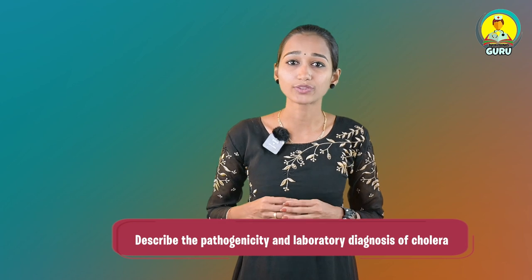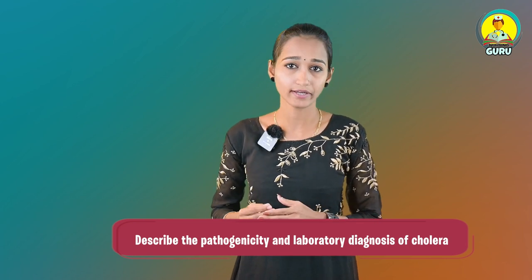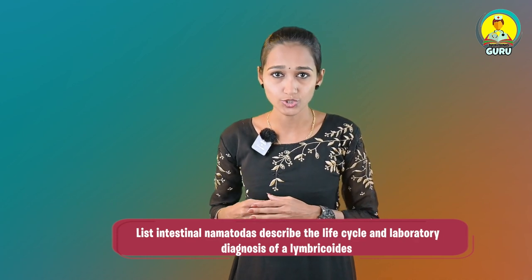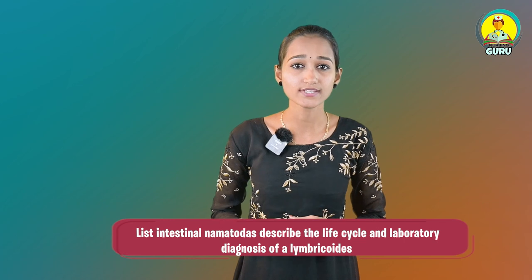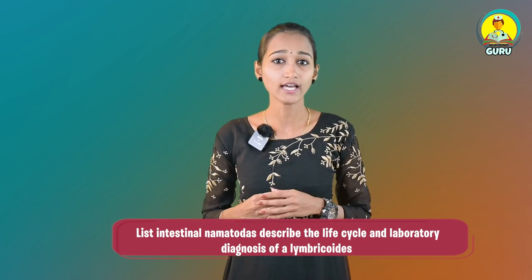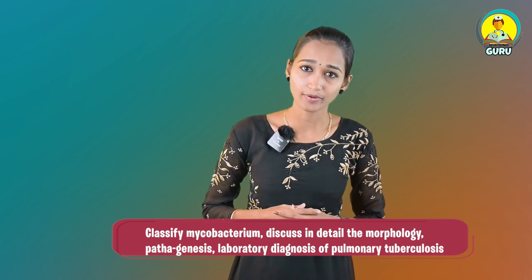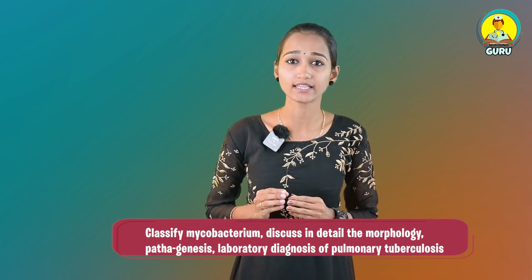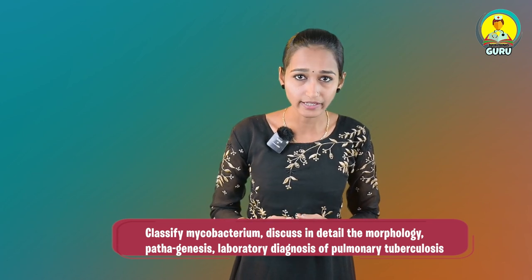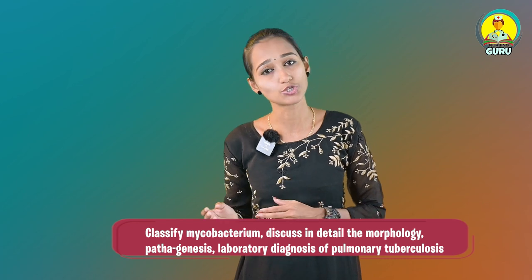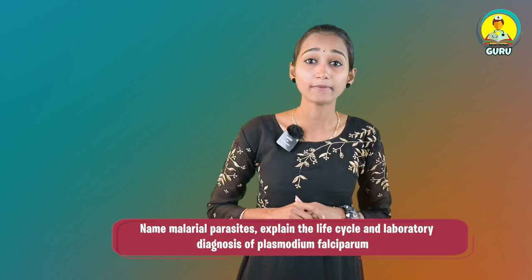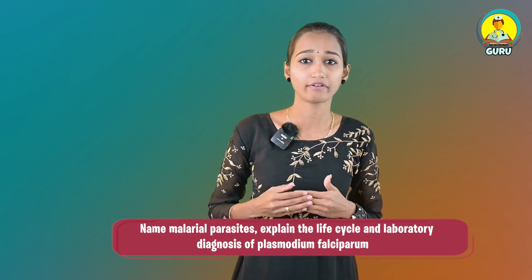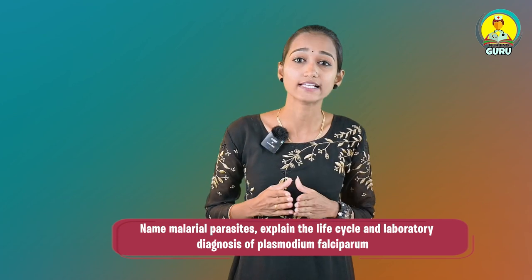Sixteenth question: describe the pathogenicity and laboratory diagnosis of cholera. Next question: list intestinal nematodes. Describe the life cycle and laboratory diagnosis of Ascaris lumbricoides. Eighteenth question: classify mycobacterium. Discuss in detail the morphology, pathogenicity, and laboratory diagnosis of pulmonary tuberculosis. Next question: name malarial parasites. Explain the life cycle and laboratory diagnosis of Plasmodium falciparum.